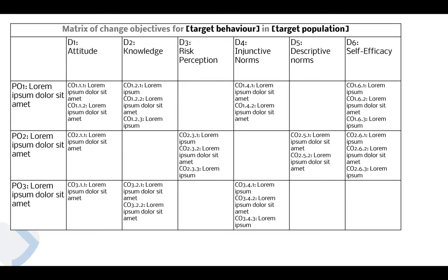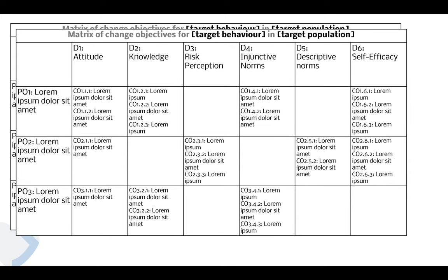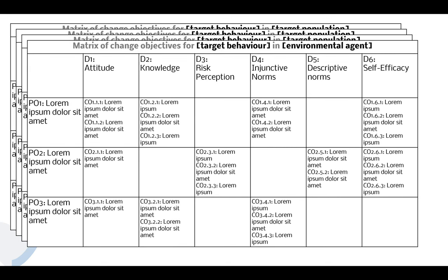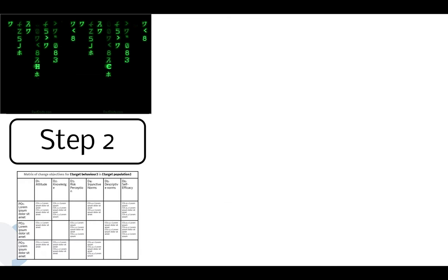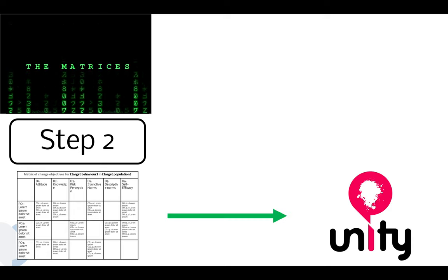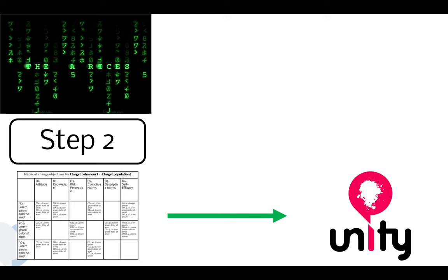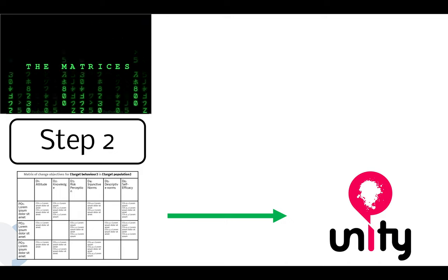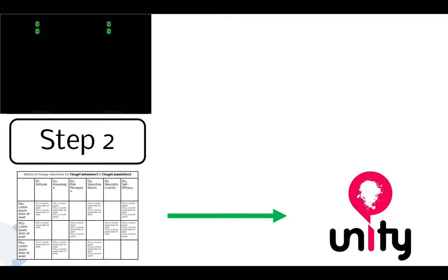If I understand correctly, you've basically had step two now, or you're working on step two, which means you're creating matrices with lots of change objectives to target your target behavior in some population — and potentially also for the environmental agents, which is basically just repeating the exercises. So that's step two.